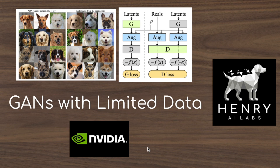Thanks for watching this overview of training GANs with limited data. From this video, you should have a sense of the discriminator overfitting problem, where a small training set causes the discriminator to overfit to high-frequency features and can't distinguish the generated distribution from a held-out validation set. The paper introduces augmentations that leak into the generator, how to solve this with invertible transformations, the discriminator goggles strategy compared to balanced consistency regularization, and heuristics that automatically schedule and tune the augmentation strength — the P hyperparameter.